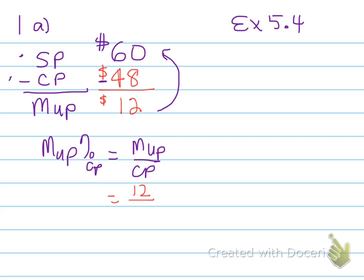In this case we've got markup to cost. Markup is $12, cost price is $48. When you work this out on your calculator, you end up with 0.25, which is 25%. So a 25% markup based on cost is what we have here.